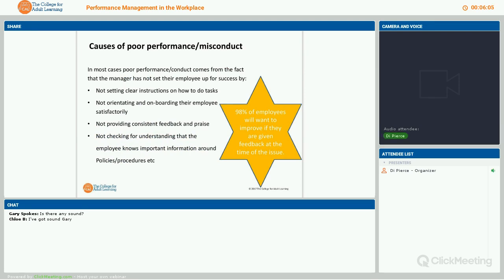What causes poor performance or misconduct? In quite simple terms, it's because the manager has not set that person up for success right at the very start. This means not setting clear instructions on how to do the task, not spending enough time through orientation and induction, not spending enough coaching time when delegating new tasks, not providing consistent feedback and praise, and not checking that the employee actually knows important information around policies and procedures.